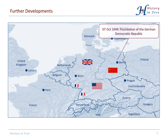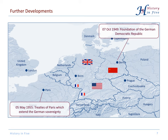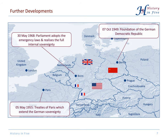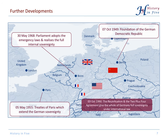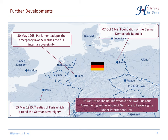Further developments: in October 1949, the GDR, the eastern German state, was founded. West Germany could extend her sovereignty through the Treaties of Paris, and full internal sovereignty was reached in 1968 when the German parliament adopted the emergency laws. Full external sovereignty under international law was achieved on the 3rd of October 1990 with the German reunification.